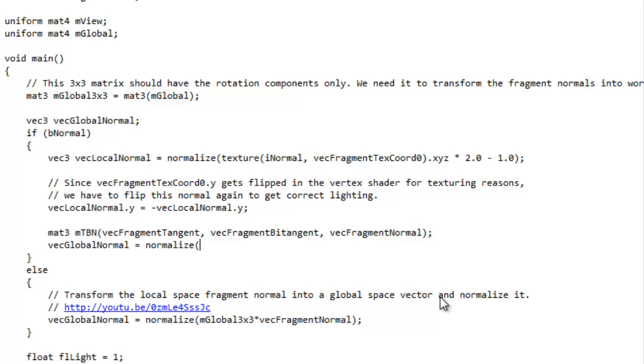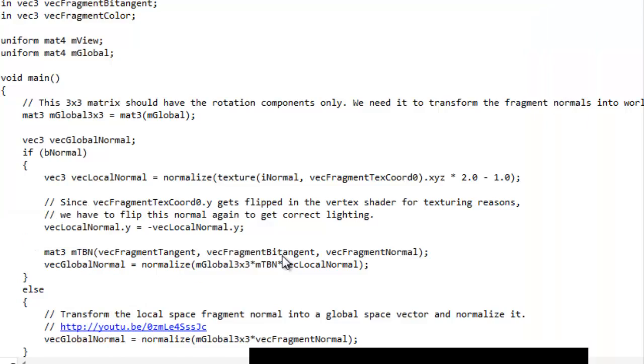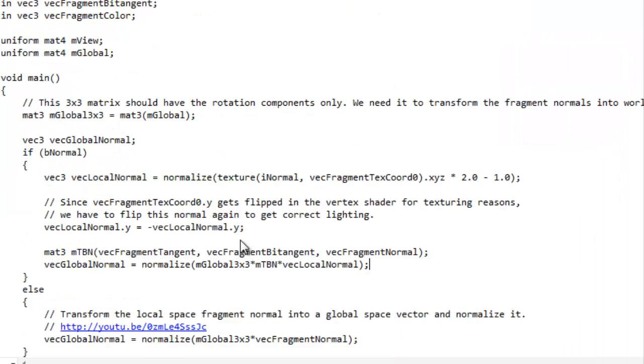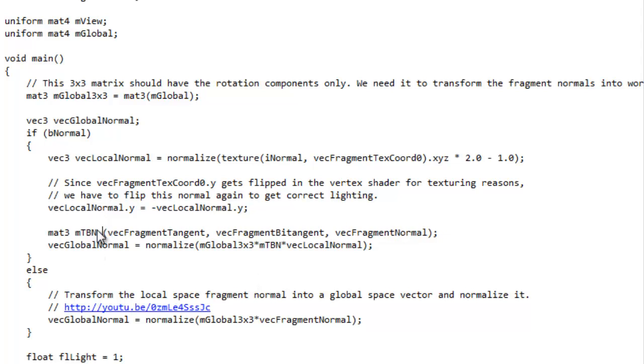So now we have to create the normal in the global space and that's going to be very similar to what we did last time. We have our global 3 by 3 matrix but now we have to multiply through by our TBN matrix before we're done. And here instead of using fragment normal, we use fragment normal and we pass that into the matrix, but now we build another matrix and we pass the normal that we got from the texture instead because this is the one that has all the detail in. So I think that should be it. Let's run it and see what we get here.